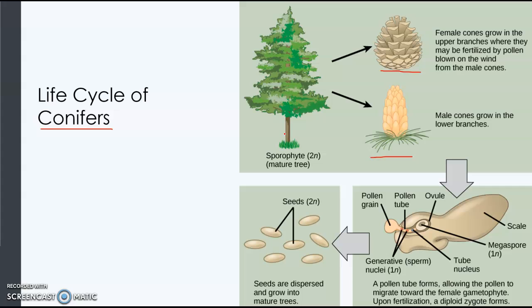If you look down at the bottom right, the ovule is the name for the egg. The pollen grain lands at the base of the cone, and then a pollen tube grows, and that pollen tube carries the sperm to the egg.